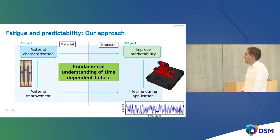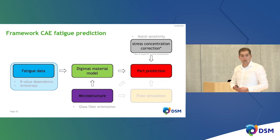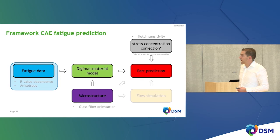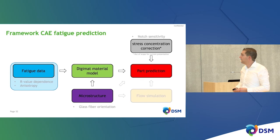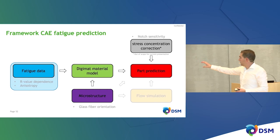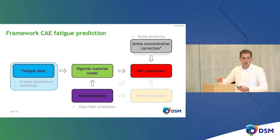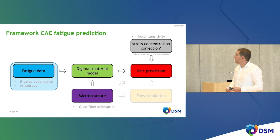Last but not least, I want to highlight our improved predictability work — significant efforts to develop a framework for lifetime predictions at part level. I can't cover everything in view of time, but the framework starts with fatigue data to generate material cards and fit the material model. Then, with this material model — for which we use Digimat — you also incorporate microstructural information to capture anisotropy effects. A flow simulation predicts the fiber orientation on the part, and a stress concentration correction accounts for notch sensitivity and stressed volume.